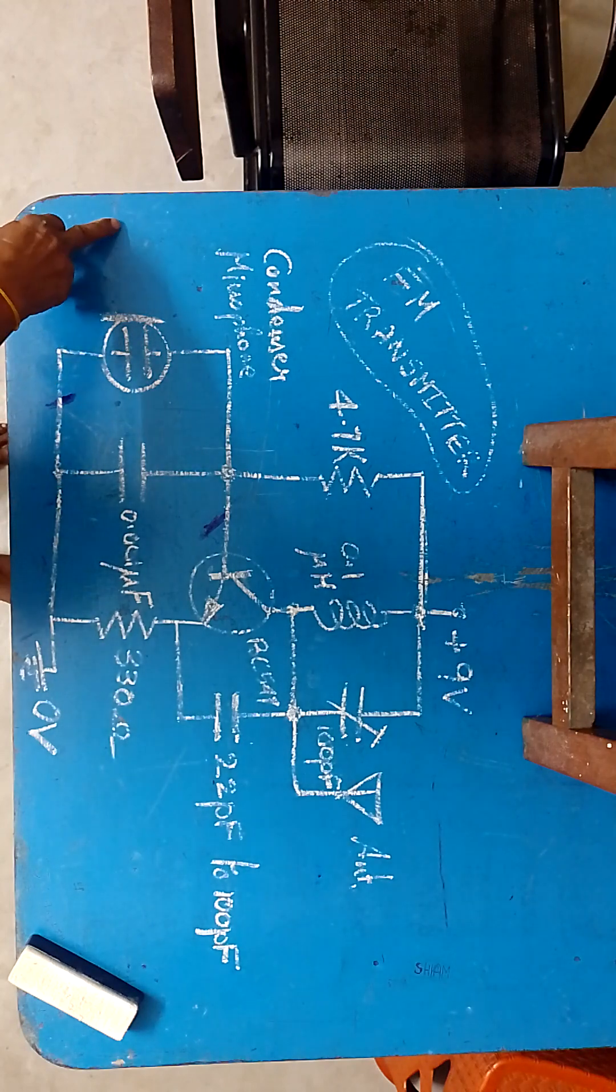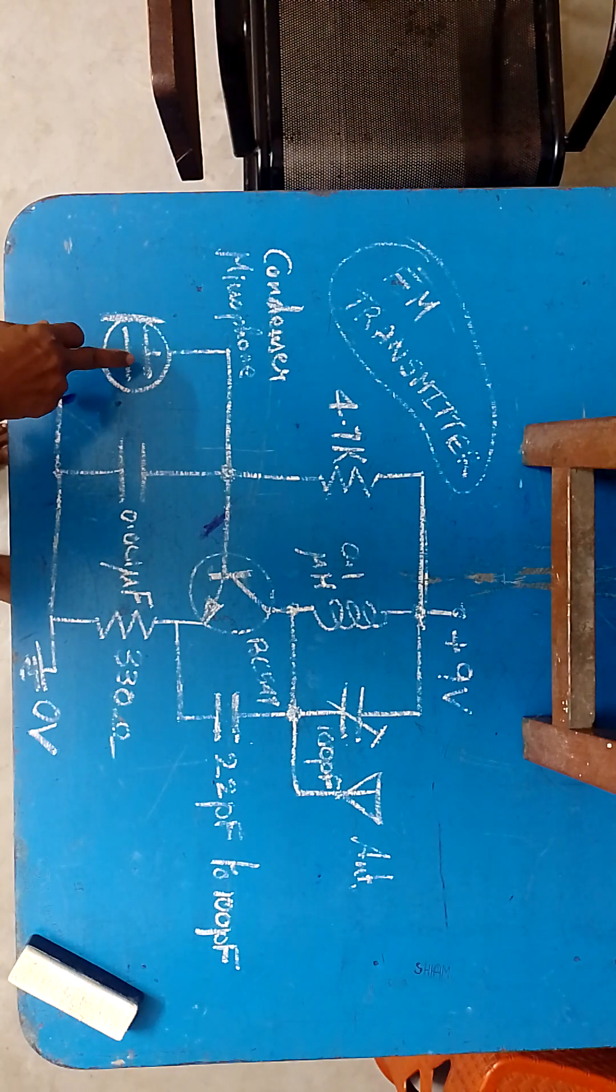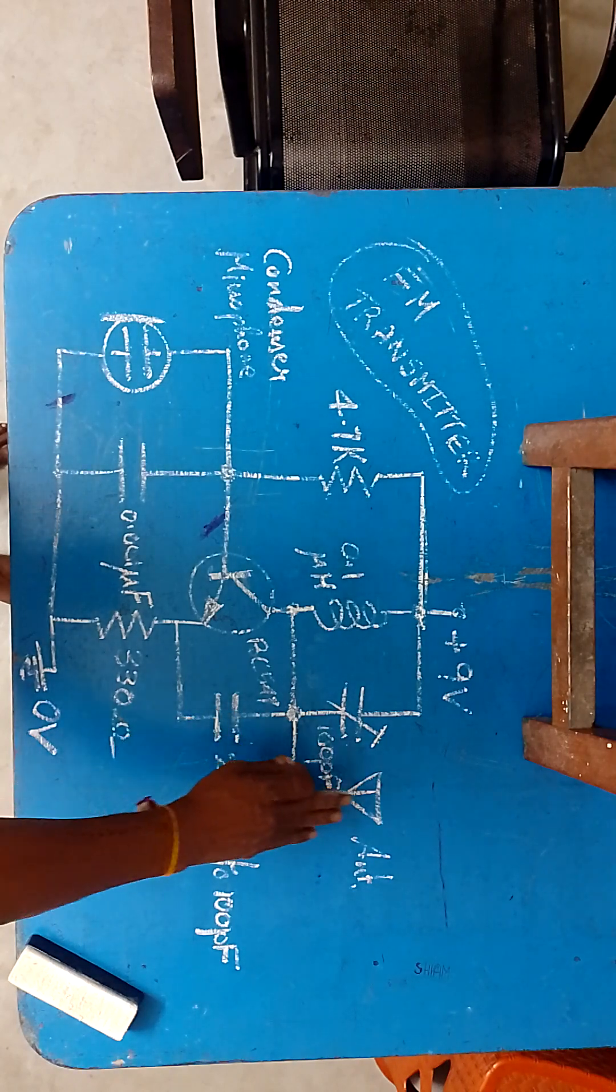So when the sound waves pass through the condenser microphone, the capacitance varies. Therefore the resonant frequency of the circuit varies. So this will produce FM modulated waveform at the output antenna.